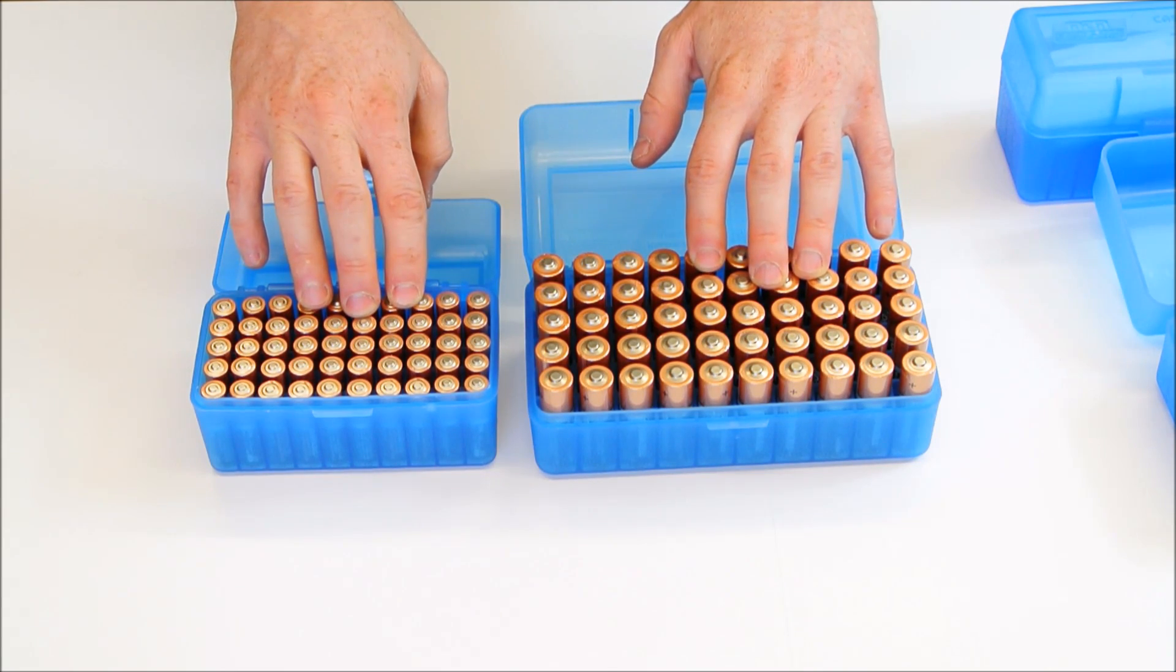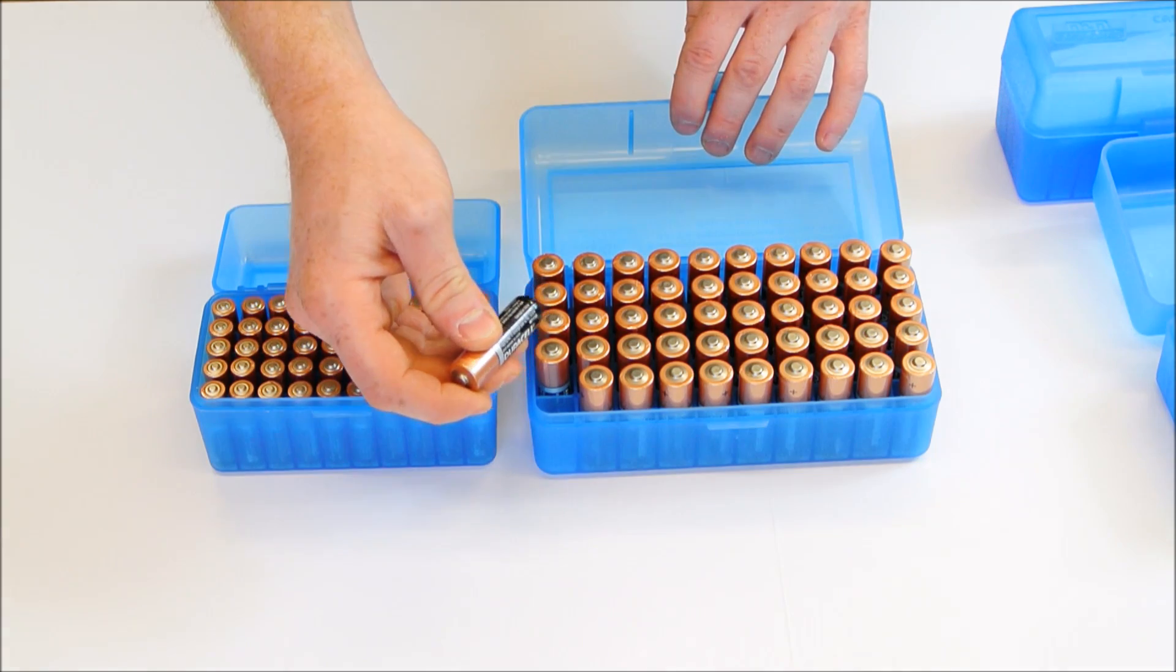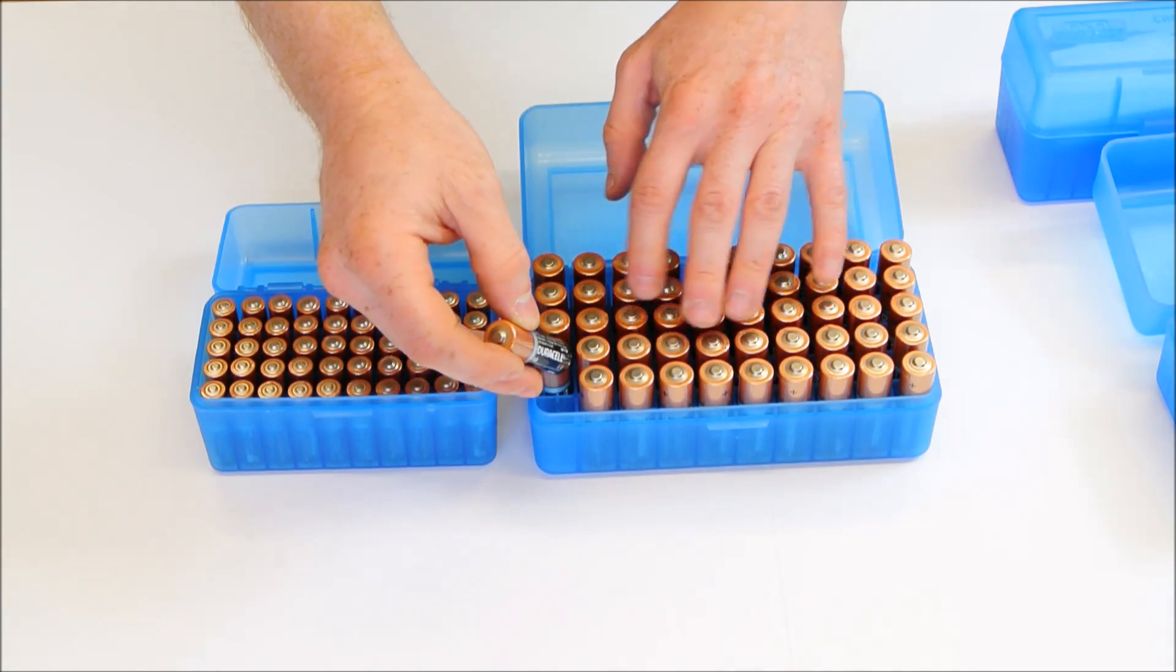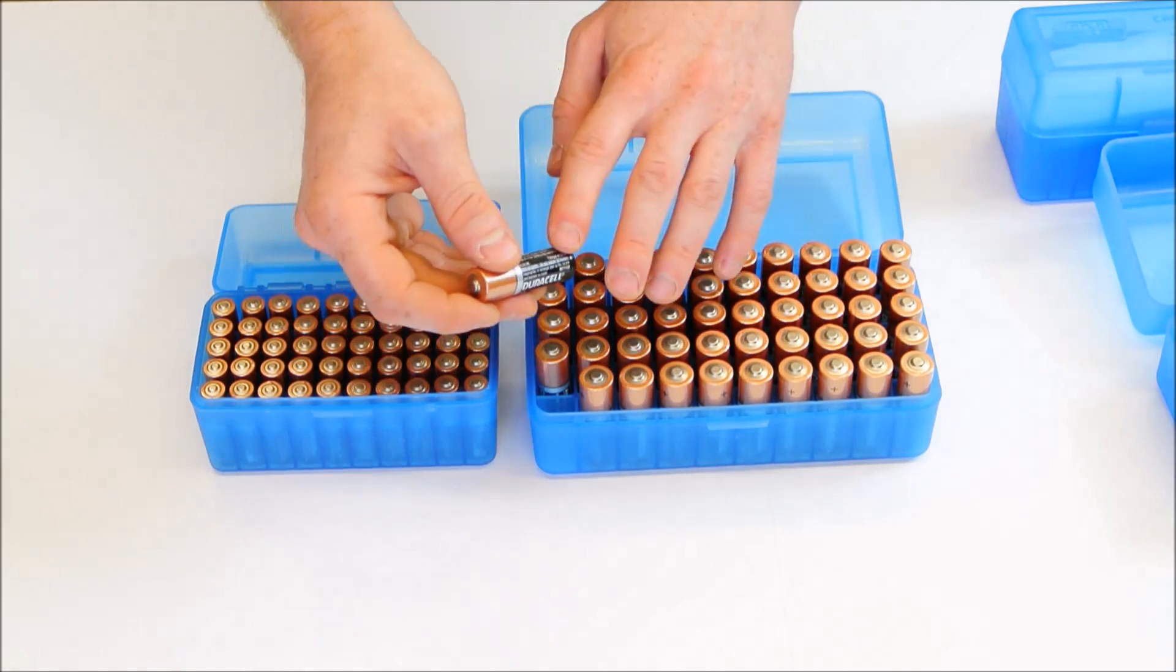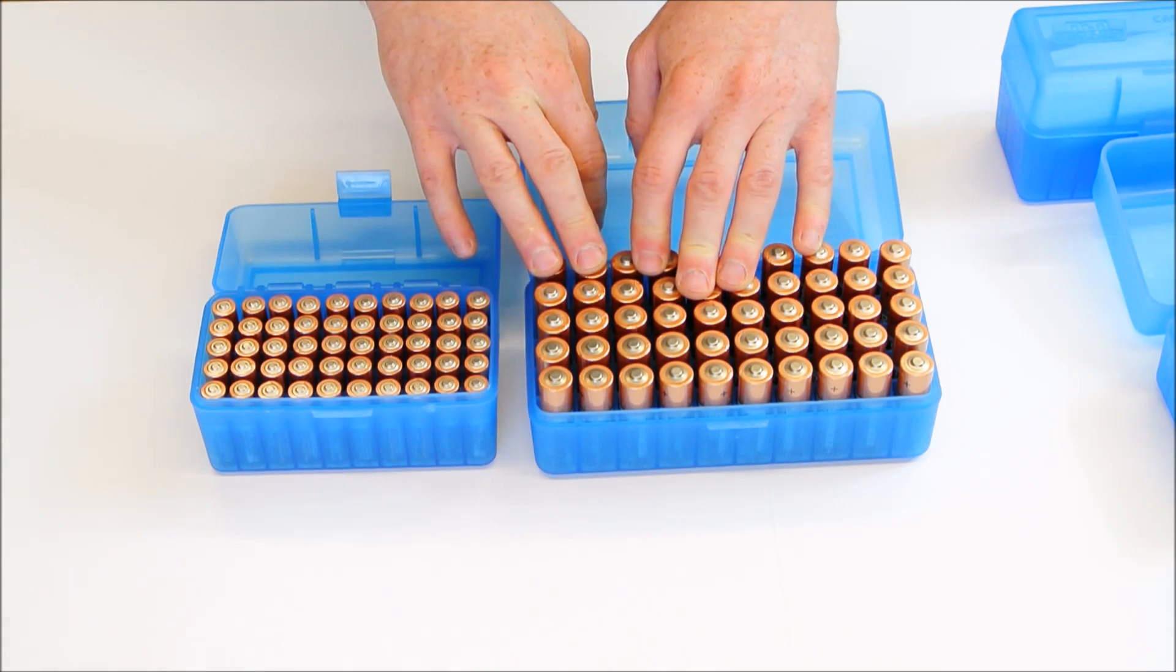Each case is going to hold 50 batteries in individual compartments. So this prevents the batteries from shorting potentially, and it also keeps the batteries safe in case one of the batteries has a leak or some other problem. It's not in contact with any of the other batteries.